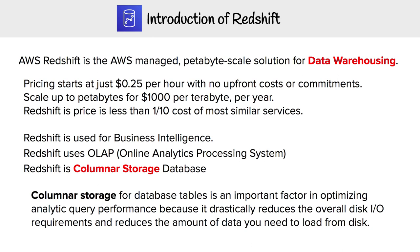Columnar storage for database tables is an important factor in optimizing analytic query performance because it drastically reduces the overall disk I/O requirements and reduces the amount of data you need to load from disk. Columnar storage is the reason why Redshift is so fast.